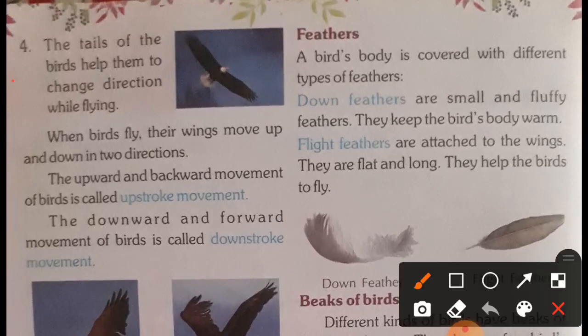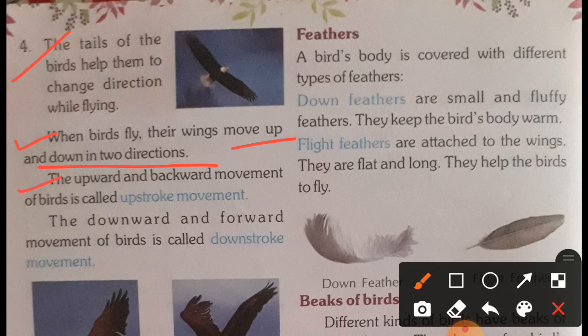Fourth, the tail of the birds helps them to change direction while flying. When birds fly, their wings move up and down in two directions. The upward and backward movement of wings is called the upstroke movement. The downward and forward movement is called the downstroke movement.